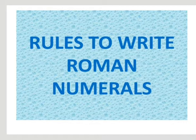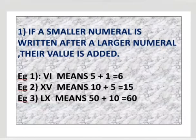Now let us see which is rule number 1. If a smaller numeral is written after a larger numeral, their value is added. That means VI, I is 1 and V is 5. VI means what? 5 plus 1 is 6.